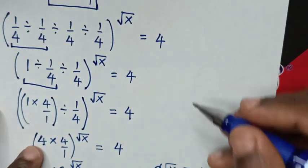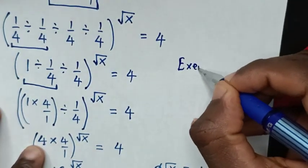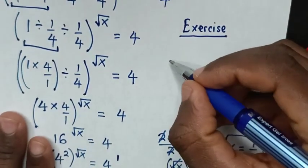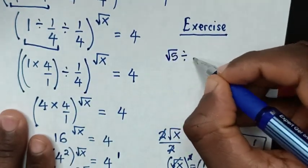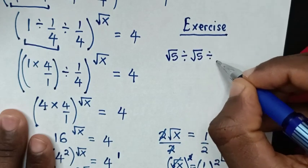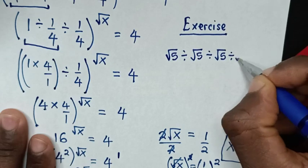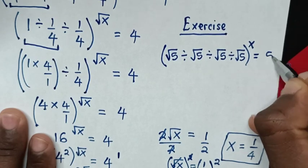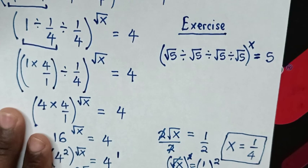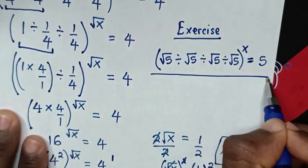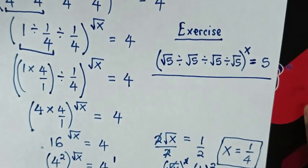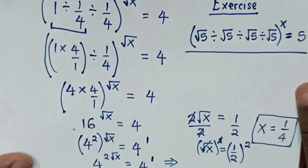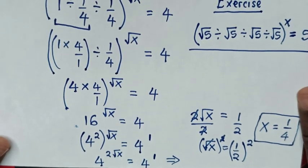I'm going to write an exercise for you to do in your own time. It is the same type: square root of 5 divided by square root of 5 divided by square root of 5 divided by square root of 5, in brackets, to the power of x, is equal to 5. Find the value of x. Thank you for watching. If you are new to this channel, please subscribe and give a thumbs up or like if you enjoyed this video. See you in the next video, bye bye!